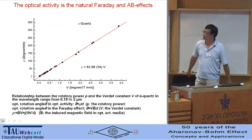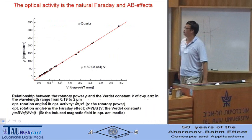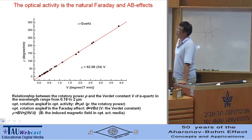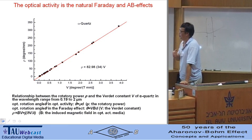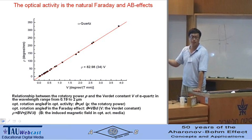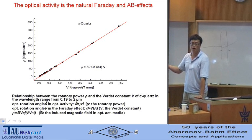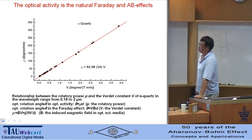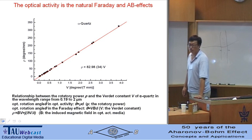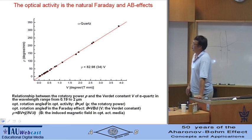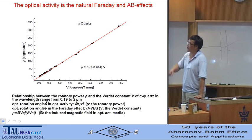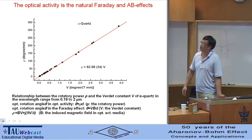This is an experimental confirmation between the Verdet constant and the rotatory power for alpha quartz in the wavelength region from 0.2 to 2 micrometres. We see that a linear relation is observed between these two physical parameters.